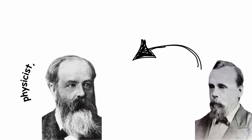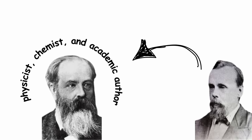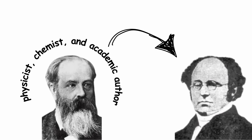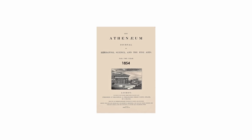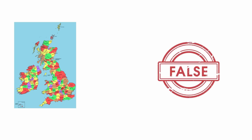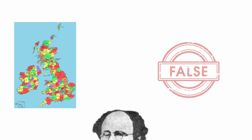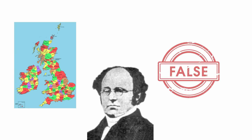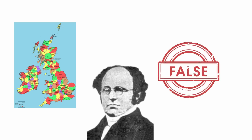Francis Guthrie immediately brought this problem to his younger brother — the physicist, chemist, and academic author Frederick Guthrie. In turn, Frederick brought it to a professor of his, mathematician and logician Augustus de Morgan. The question was later published in the magazine The Athenaeum in 1854 and again in 1860. The four-color conjecture would proceed to attract numerous false proofs, including one by de Morgan himself, and false disproofs too.